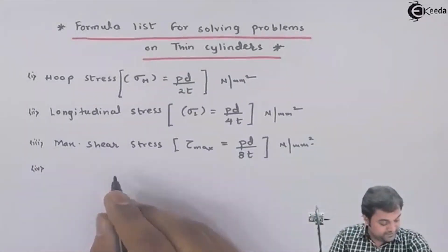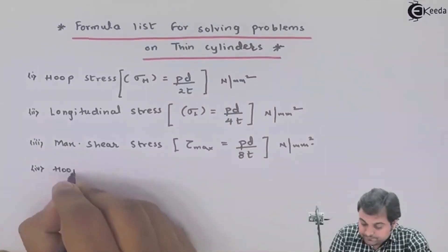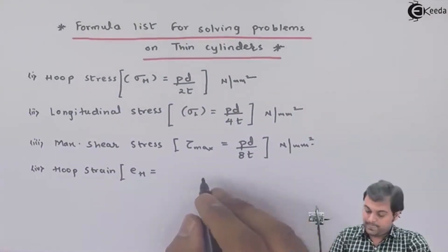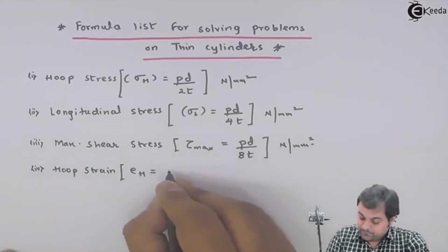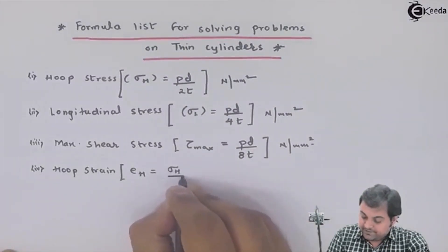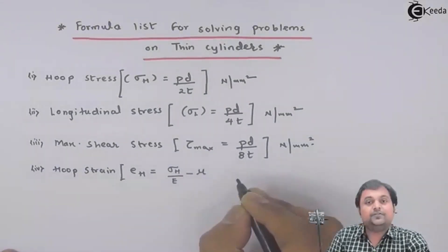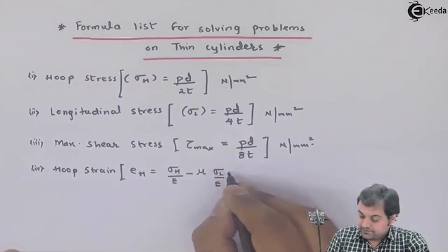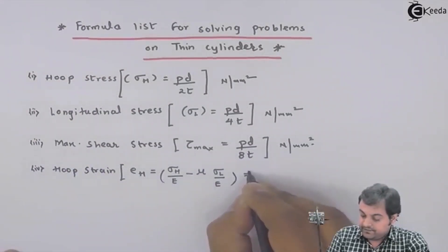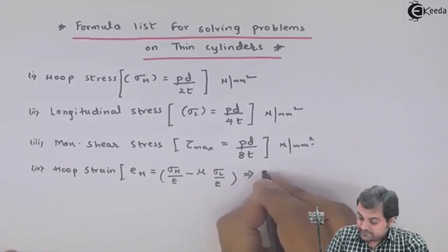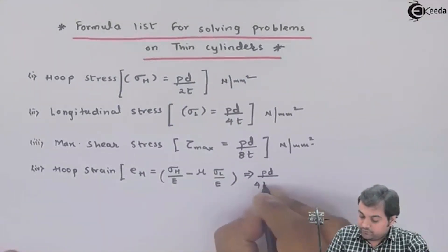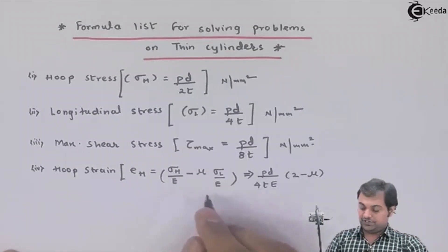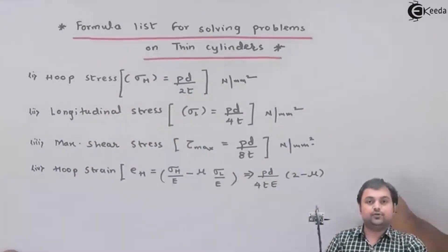Apart from these formulas we have hoop strain. Hoop strain, epsilon suffix H, equals hoop stress divided by Young's modulus, minus Poisson's ratio (mu) into longitudinal stress upon Young's modulus. This whole formula can be reduced to Pd upon 4tE into (2 minus mu). This is the hoop strain formula.